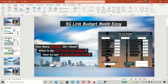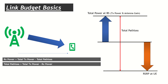From a theoretical perspective: what is link budget? The end result is we want to find the distance from the gNodeB to the cell edge where the user can sustain a minimum service. The gNodeB sends a signal at high power — this is the total power, which is the combination of base station power plus antenna gain. That is the total power that the gNodeB transmits.